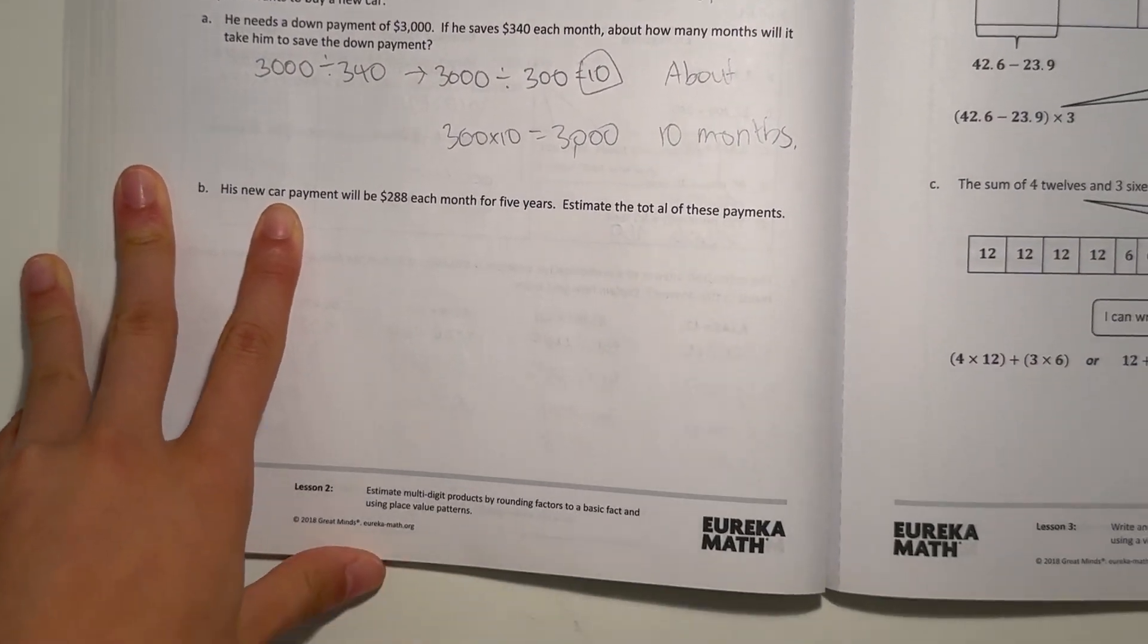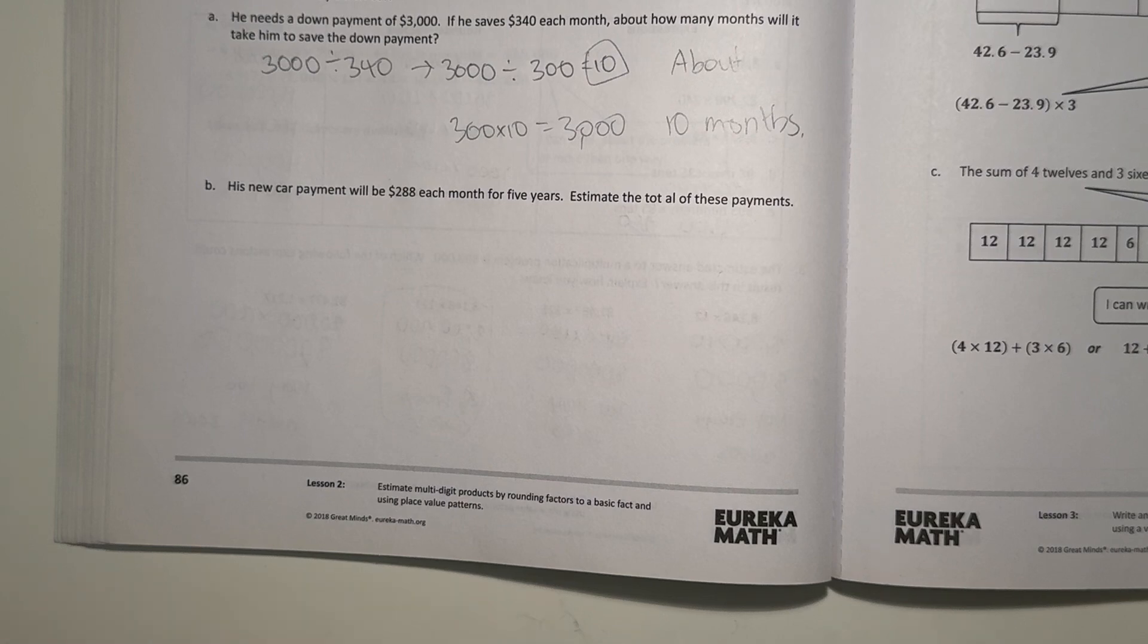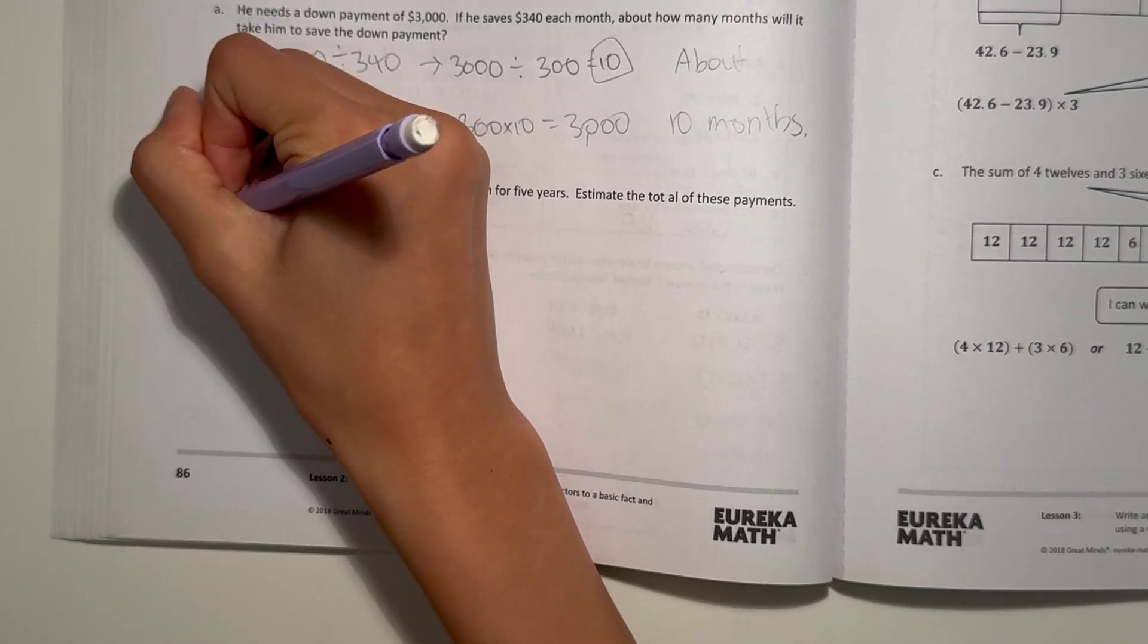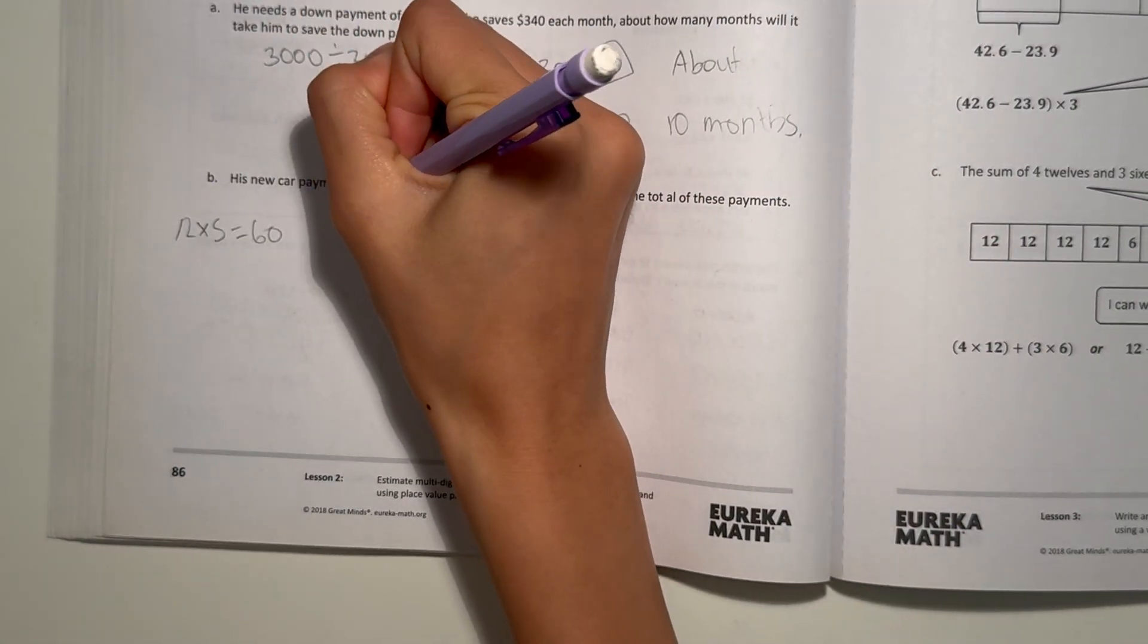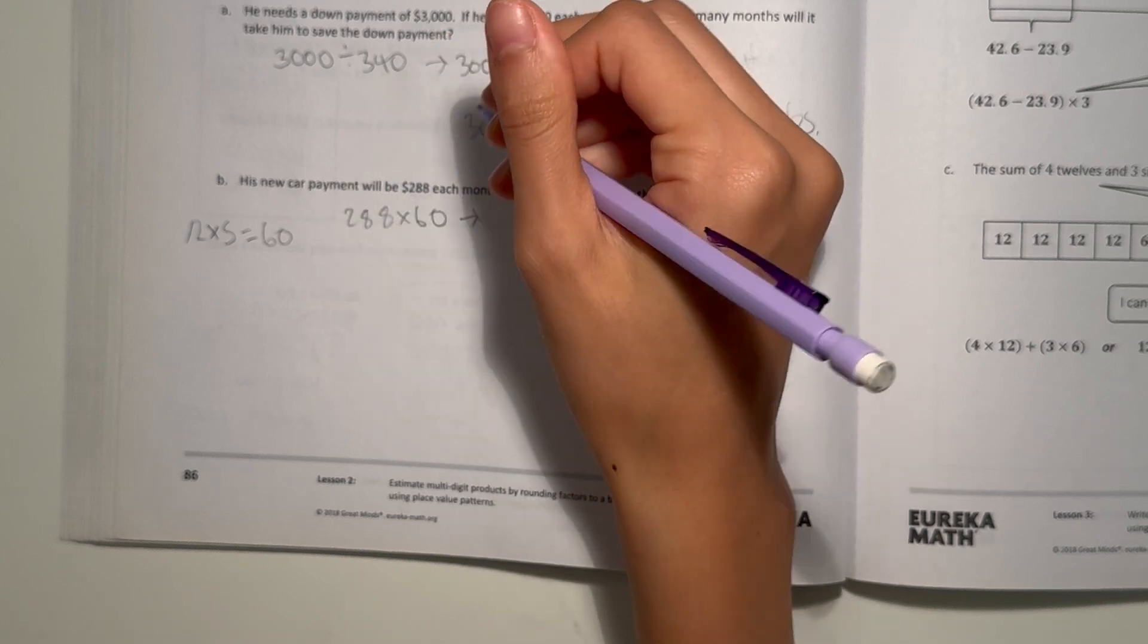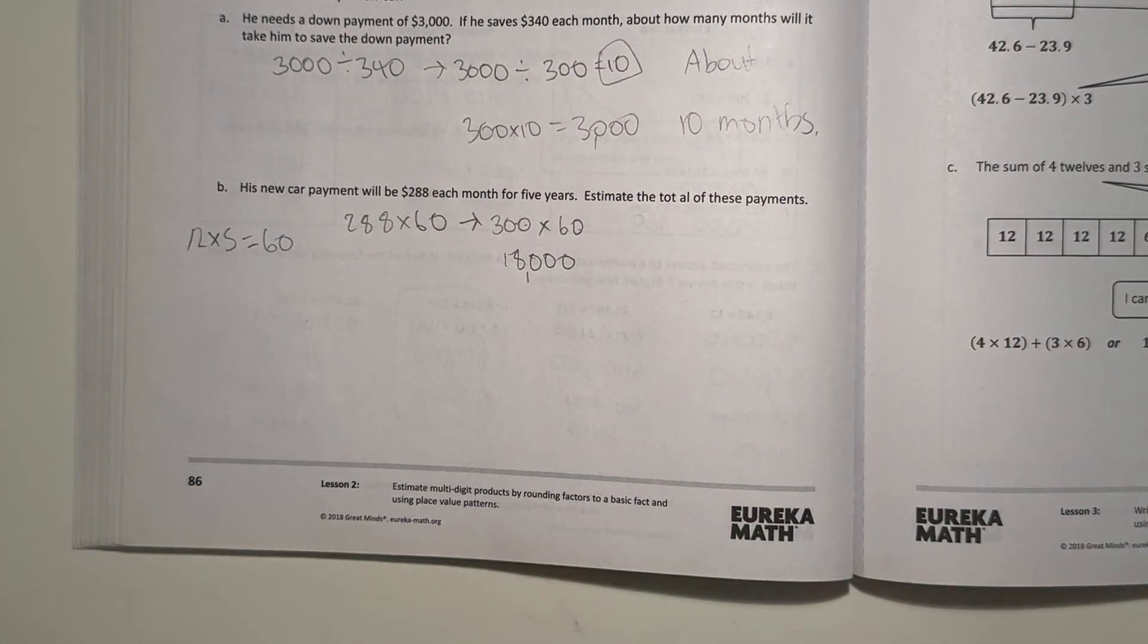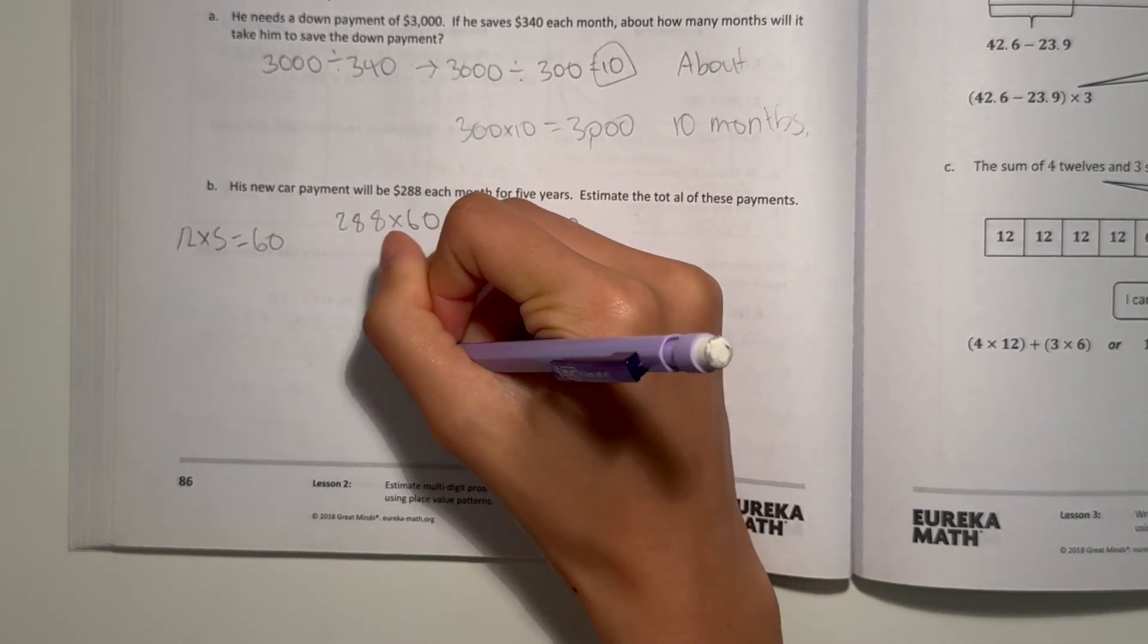And B, his new car payment will be $288 each month for five years. Estimate the total of these payments. Let's do some basic knowledge here. We know there's 12 months in a year, and for five years, so 12 × 5 would be 60. So then 288 each month for five years. Our equation is 288 × 60, which would round, 288 would round to the nearest hundred, which would be 300, and then times 60. 3 × 6 is 18, plus the three zeros. So 18,000. That means the payment will be about $18,000.